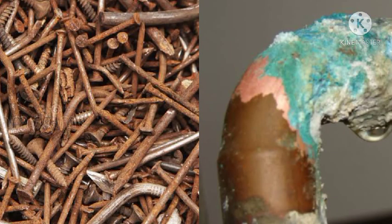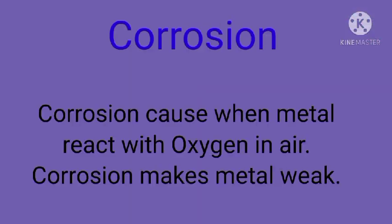Have you seen the change in color of iron or copper objects? Iron objects become brown, and a greenish substance forms on the upper layer of copper objects. This is rusting of iron and corrosion of copper — when they combine with oxygen in the air, the upper layer reacts with oxygen and becomes weak. That process is called corrosion, and corrosion makes the metal very weak.